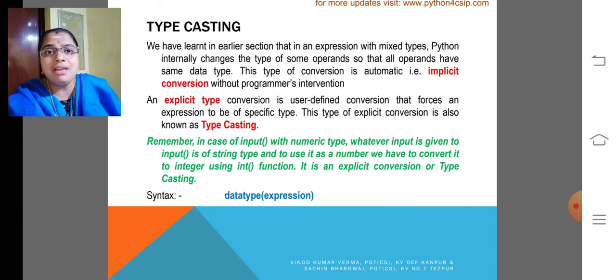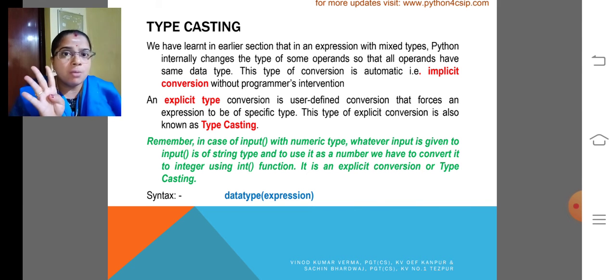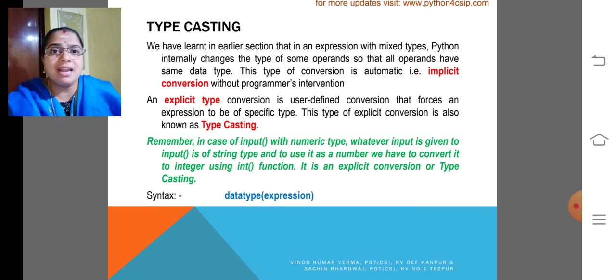It is very easy. For that, we are having many functions like int, float, string, boolean, complex. Like that, we are having many type casting functions.